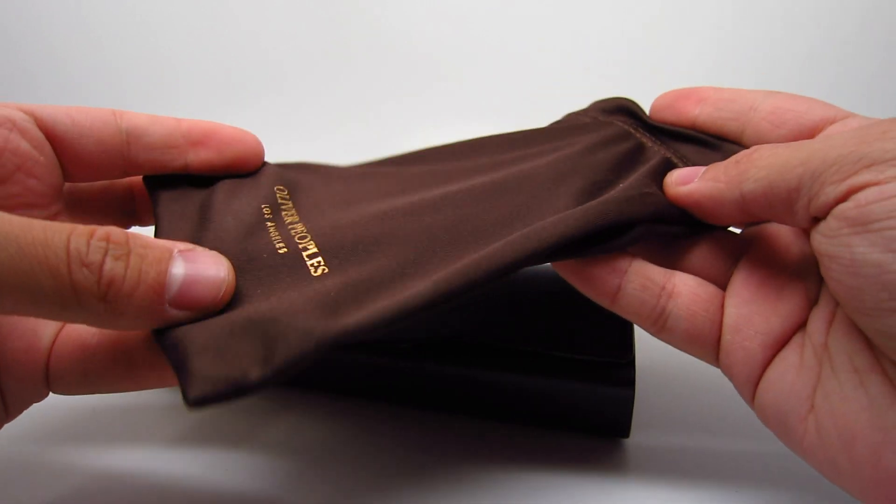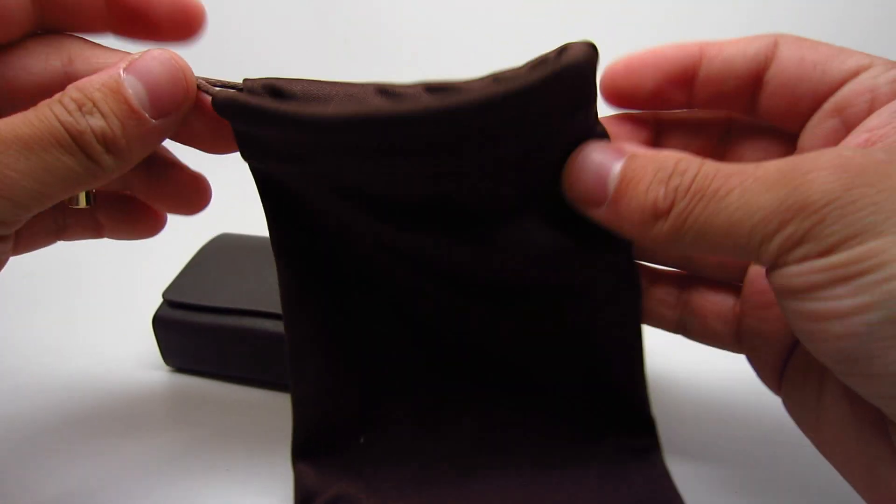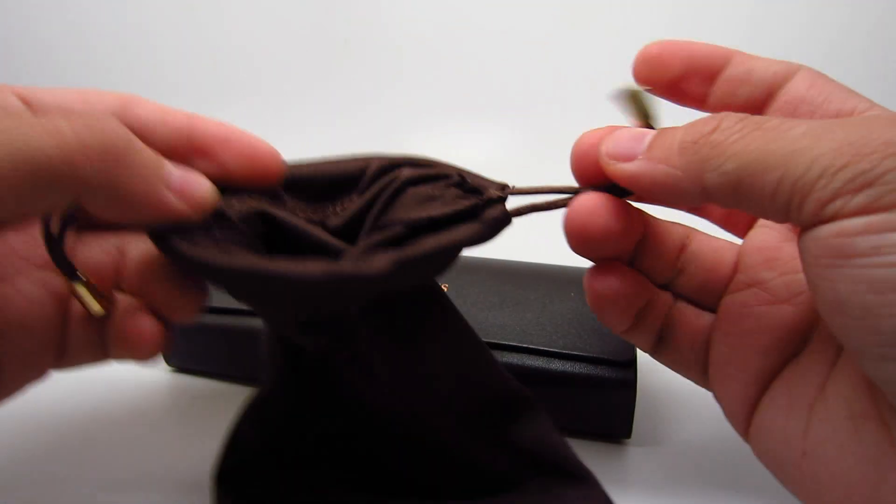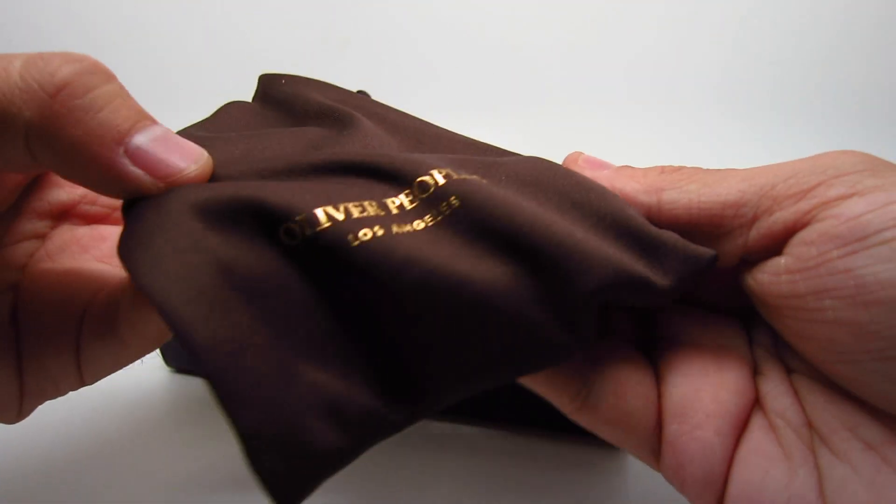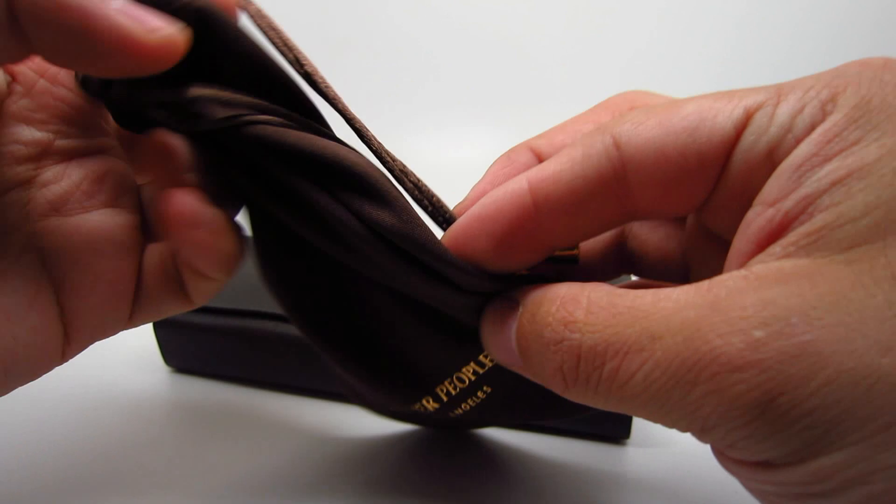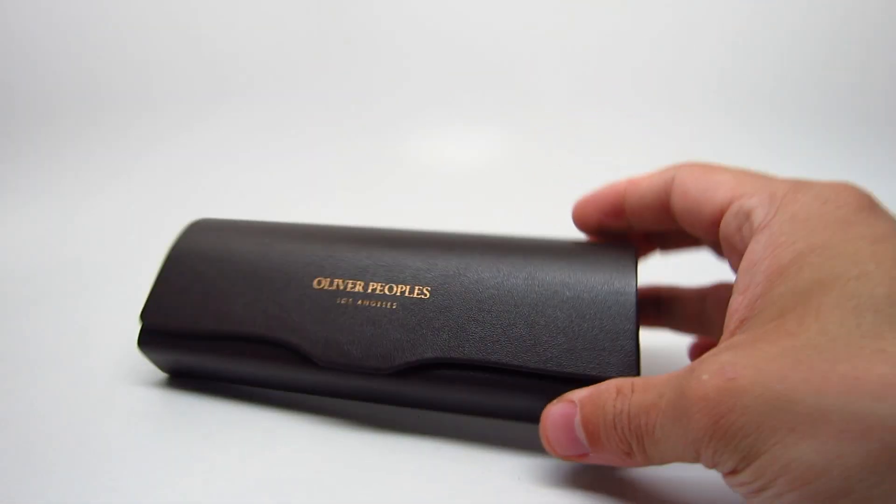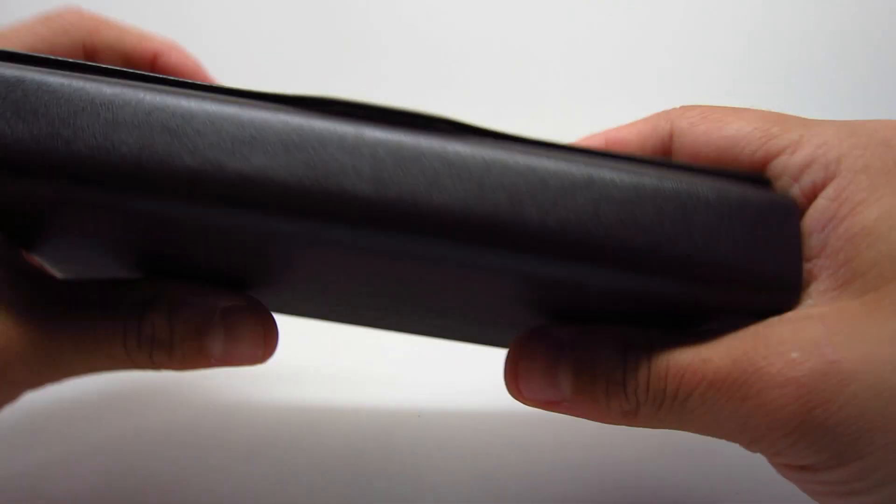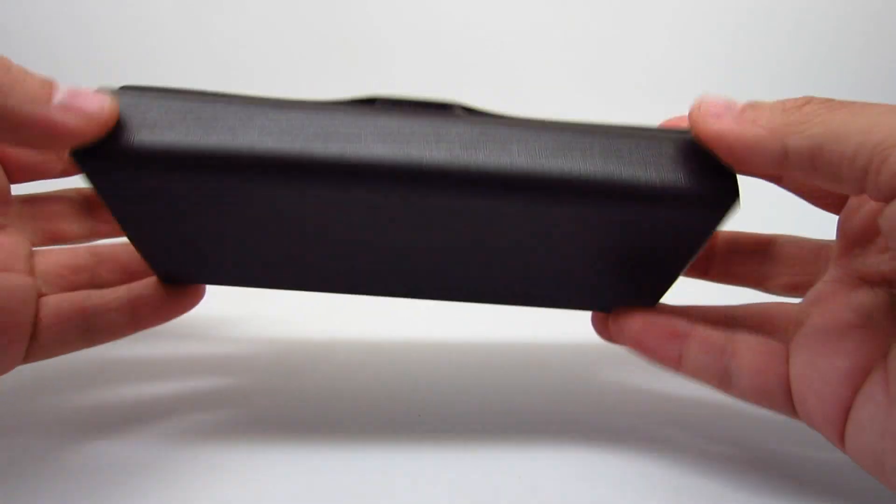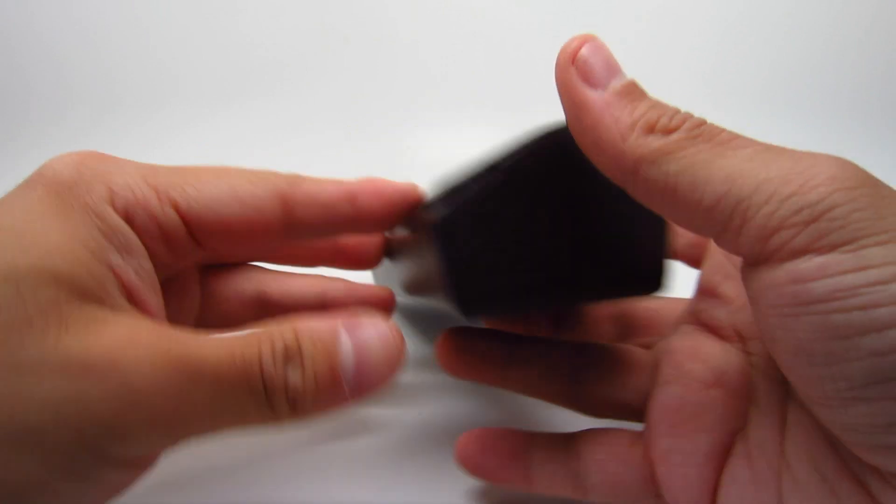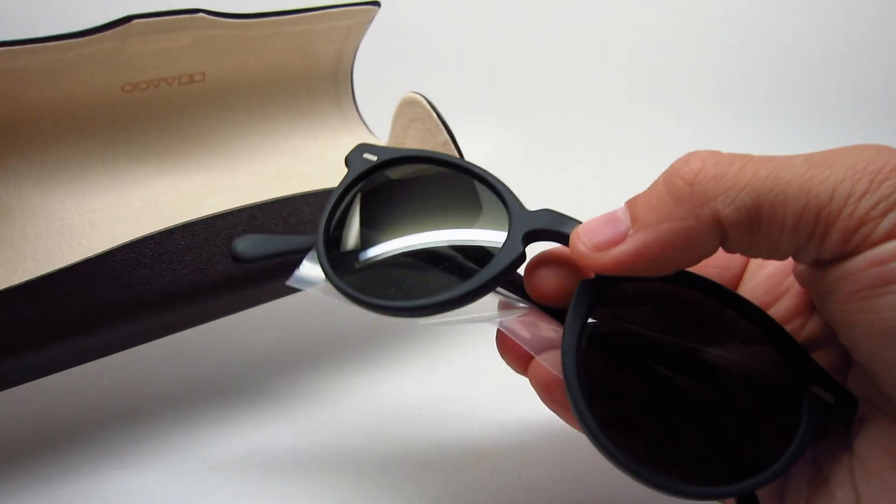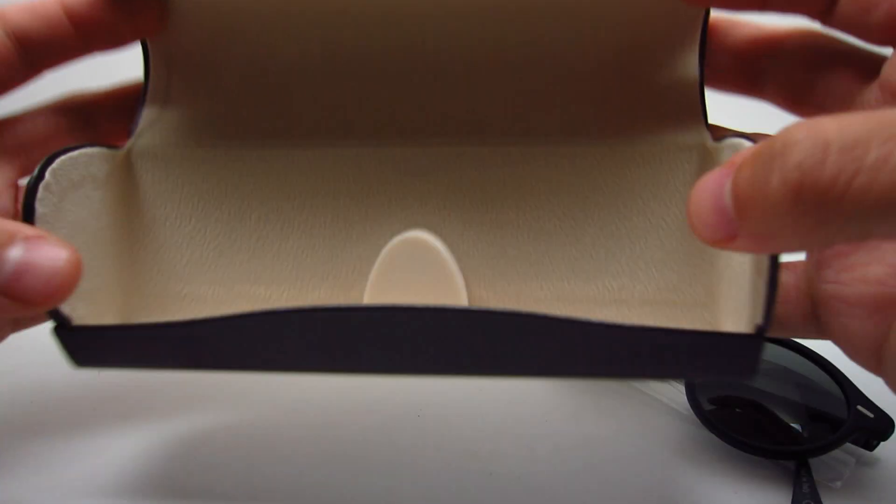The cloth pouch case also serves as your cleaning cloth and has a drawstring. This is a nice hard case, and inside you're going to get the Oliver Peoples glasses. Let me show you the insert a little bit.